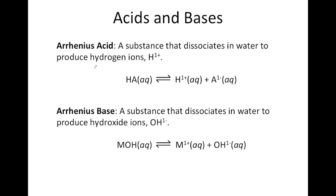Basically what the Arrhenius definition says is an acid is a compound that dissociates when you put it into water, and when it dissociates one of the ions that it produces is a H⁺ ion or a hydrogen ion. An Arrhenius base is a substance that when you put it in water it dissociates and one of the ions that it forms is a hydroxide ion. This is really the simplest definition of an acid and base.